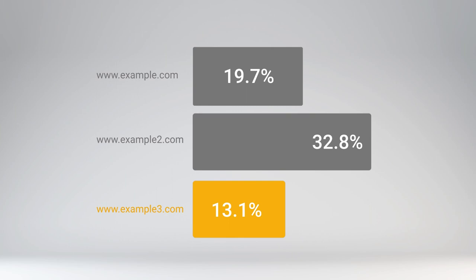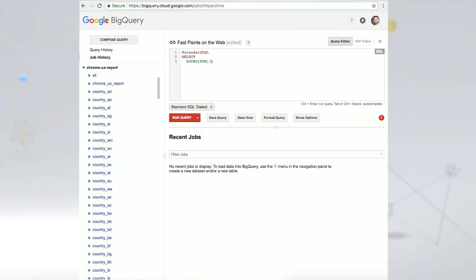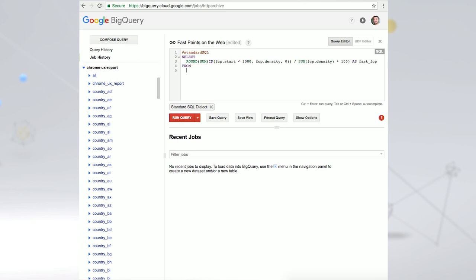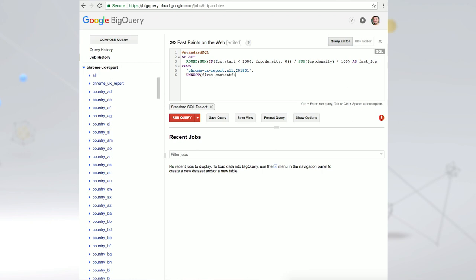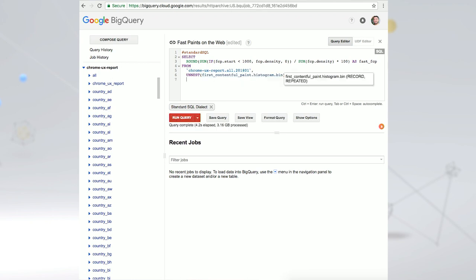So what can this data tell us about the state of the web? If we aggregate the densities for all origins where the start time is less than 1,000 milliseconds, that will tell us the approximate density of fast paint experiences on the web. In a few lines of SQL, we learned that it's 36%, meaning a third of first contentful paints occur in less than a second. Now, keep in mind that these are not weighted by relative site popularity. This demonstrates that we've still got a long way to go before achieving fast web experiences everywhere.